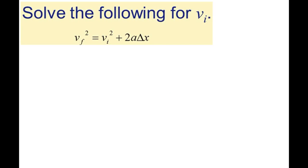Here's a problem that comes from the textbook. It says that v subscript f squared equals v subscript i squared plus 2a delta x.